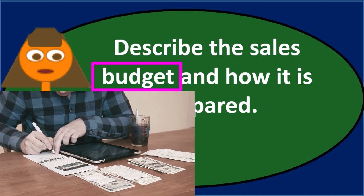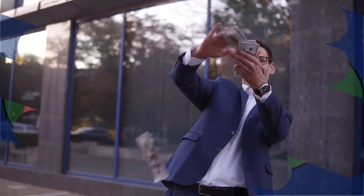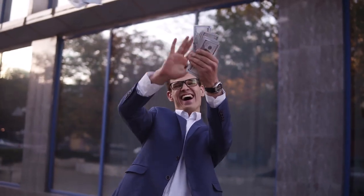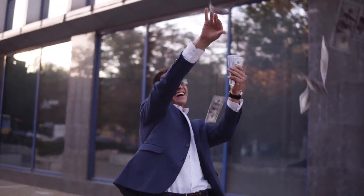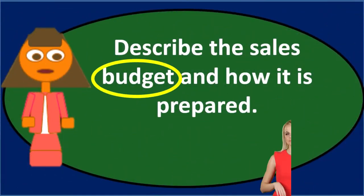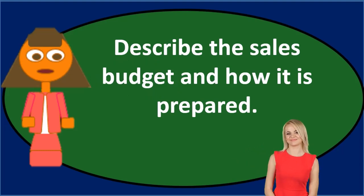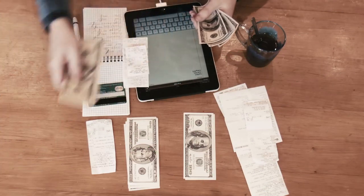The sales budget is where we begin typically, because many of the other components of the rest of the budget will be dependent on it. The budgeting process is more of an income statement related process, and the top item on the income statement is sales — so sales is the starting point of the budget. The sales budget will include sales in units, and then units times the unit price will give us the budgeted dollar amount of sales.